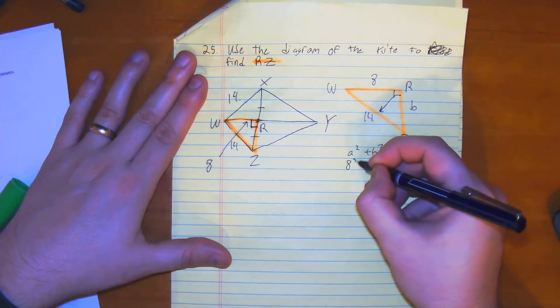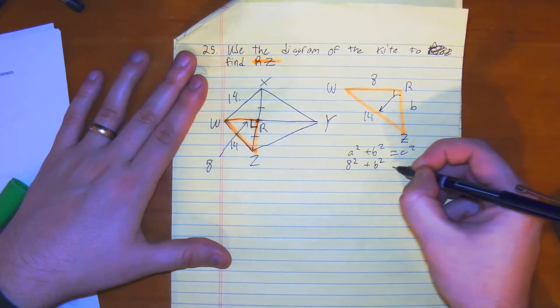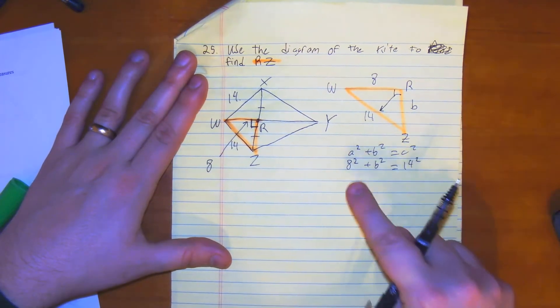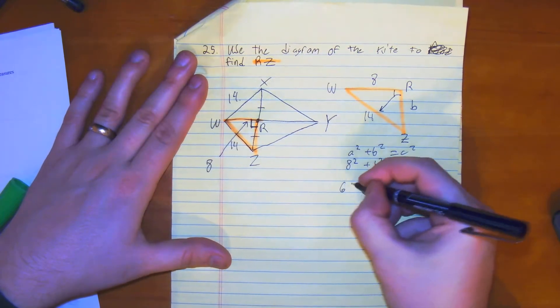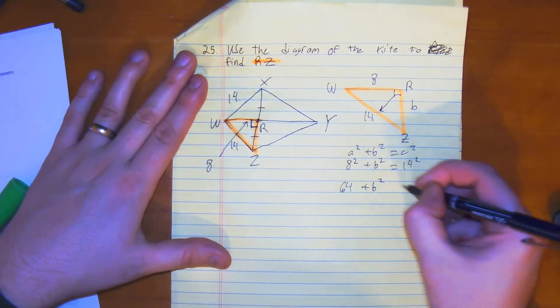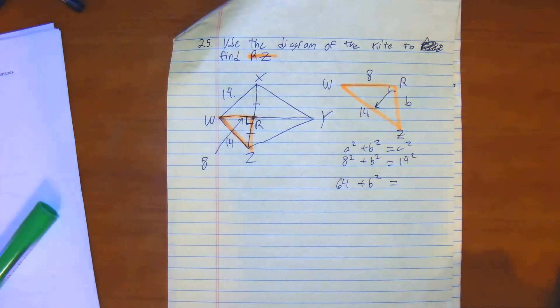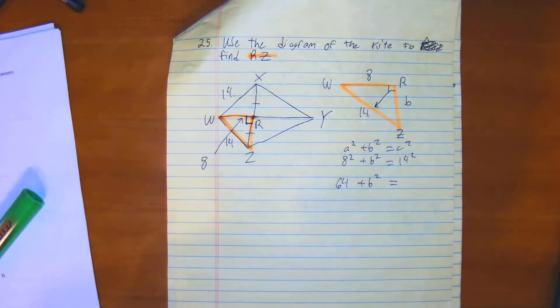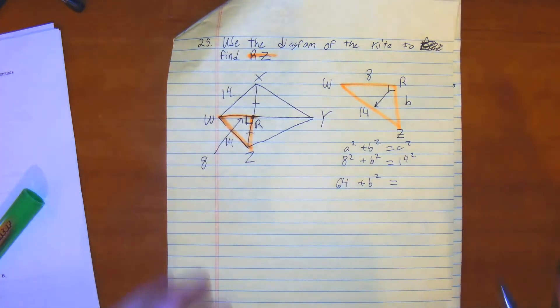We have 8 squared plus our B squared equals 14 squared. We get 64 plus B squared equals 14 times 14. I think it's 196. Yep, it's 196.